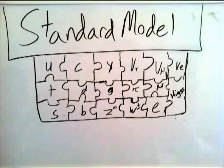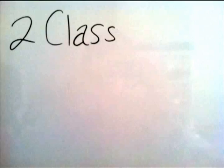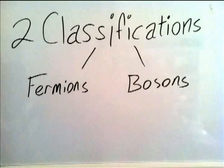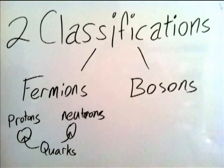In this model there are two classifications of molecules: fermions and bosons. Fermions are the more solid particles such as protons, neutrons, and electrons.